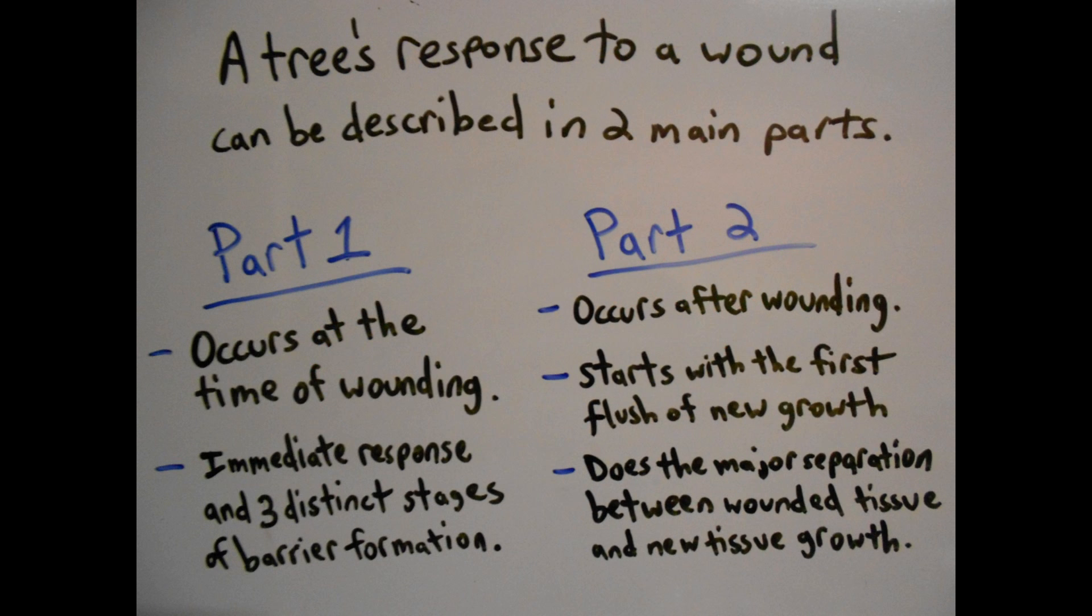A tree will compartmentalize a wounded area in a distinct order of stages described by the CODIT model. The order can be categorized as a two-part process. The first part of the process is the first response from the tree, which are localized immediate responses, where the natural defensive elements of the tree's damaged cells at the wound site interact with any threats, such as fungi and bacteria colonizing the wound surface. This involves the tree immediately reacting after the incident.